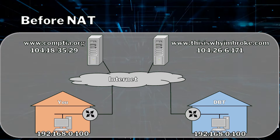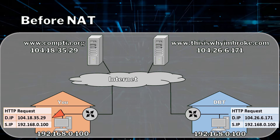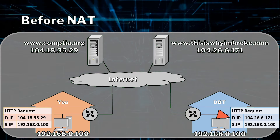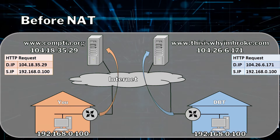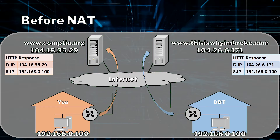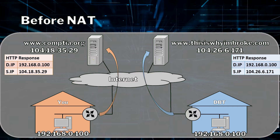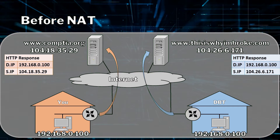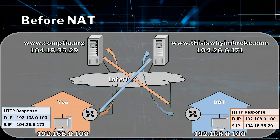Now we're both going online at the same time, so we're both generating an HTTP request. Your source IP is 192.168.0.100, just like mine. The destination IP for your request in orange is 104.18.35.29, whereas mine is going to 104.26.6.171. Off go our requests to the respective web servers, and when those requests arrive, obviously these web servers are going to reply to us. So to reply to us, they are going to start creating HTTP responses, which means source and destination IP addresses swap around. The destination IP address for the response from CompTIA is 192.168.0.100, and the destination IP address for the response from thisiswinebroke.com is also 192.168.0.100, which means that you're possibly going to end up with my response, and I'm possibly going to end up with your response.